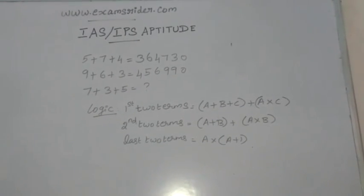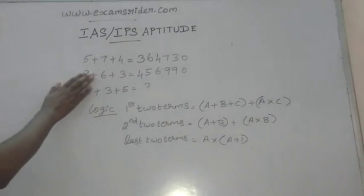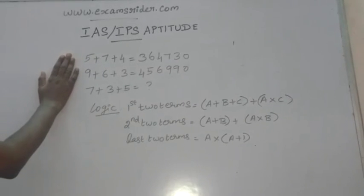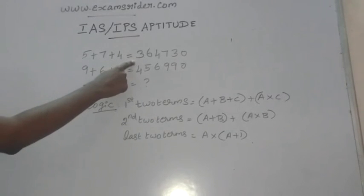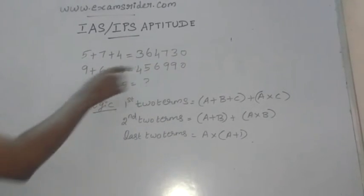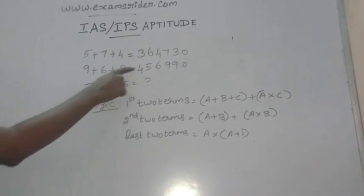Hello friends, now I am going to tell the IAS and the ITS aptitude exam questions. Now I am showing this sum: 5 plus 7 plus 4 is equal to 364730. 9 plus 6 plus 3 is equal to 456990.